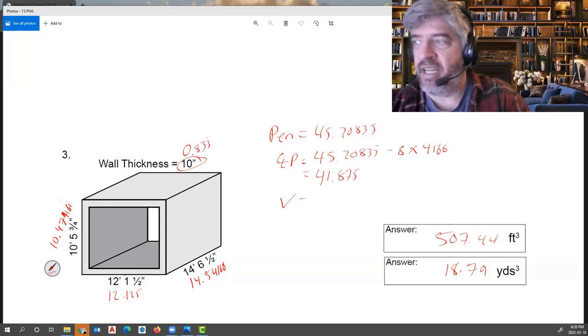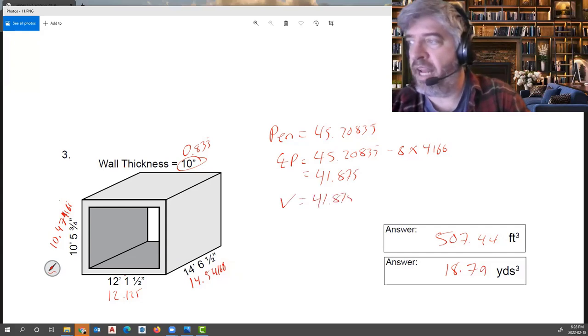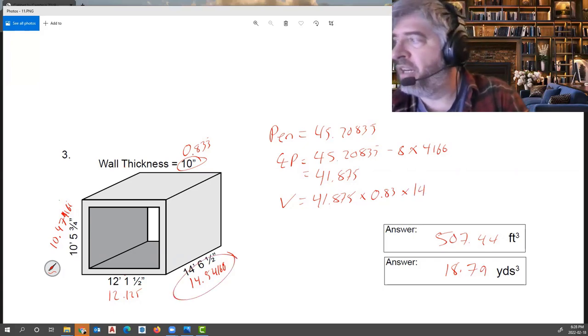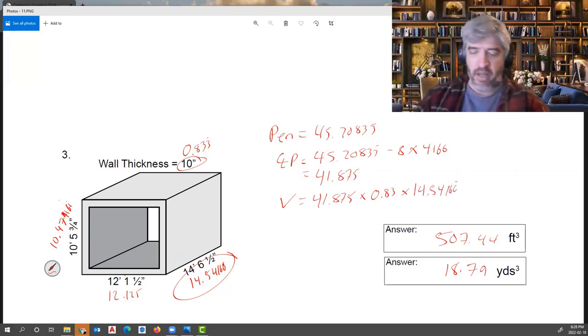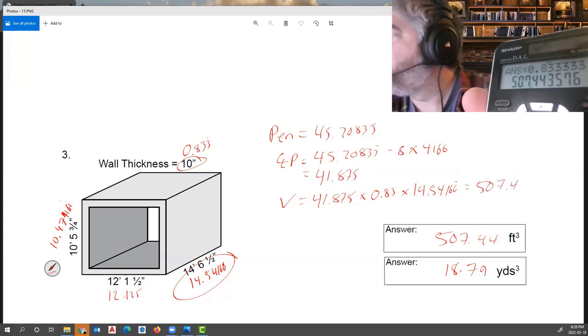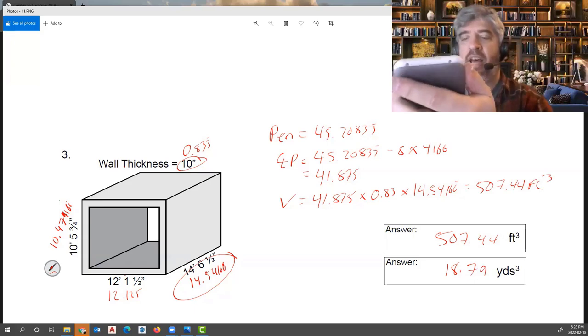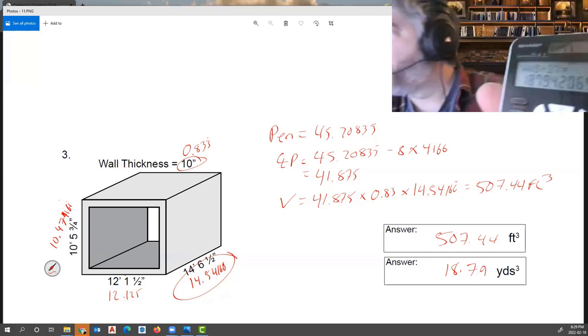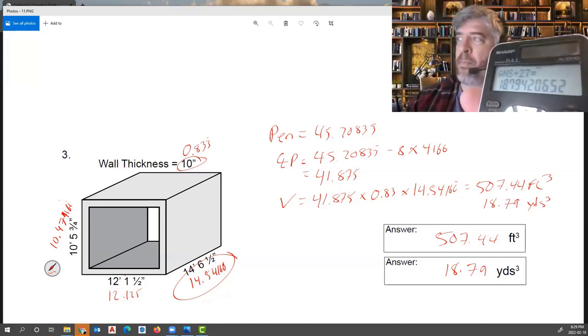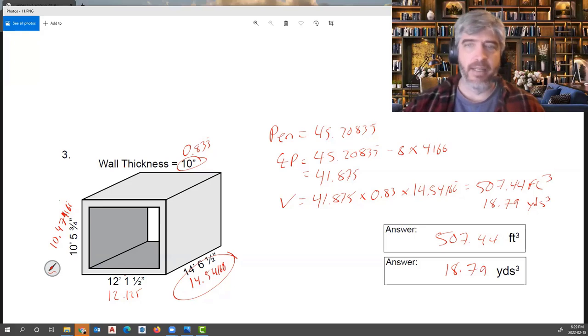So now this becomes volume. Very easy. The length is my center line perimeter, 41.875. The width is my wall thickness times my 0.83. And then my length or my last depth, height, whatever, is my 14.54166. So I take these numbers times 0.8333 times 14.541666. I hit equals. Guess what? I end up with 507.44 cubic feet. Once I divide that by 27, I end up with 18.79. And that is by far the quickest method because you can see the amount of lines I used to solve for that.